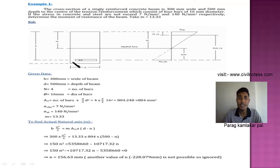It consists of 4 bars of 16 mm diameter. If the stress in concrete and the steel are not to exceed 7 N per mm square and 140 N per mm square respectively, determine the moment of resistance of the beam. Take modular ratio equals to 13.33.